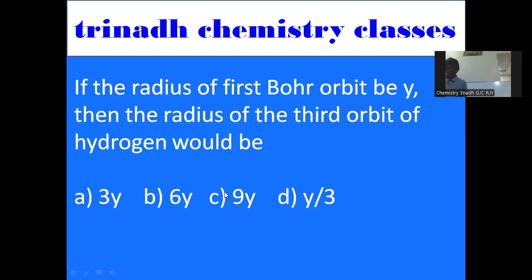The first question: if the radius of the first Bohr orbit be y, then the radius of the third Bohr orbit of hydrogen would be? The options are: A) 3y, B) 6y, C) 9y, and D) y/3.